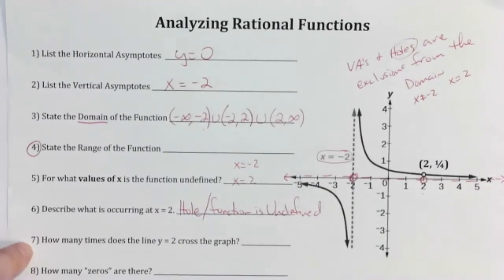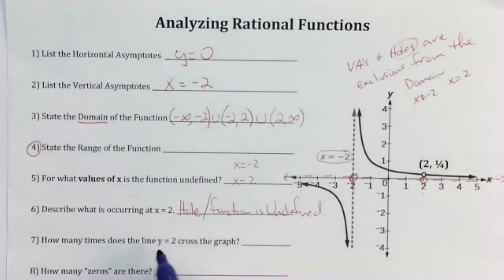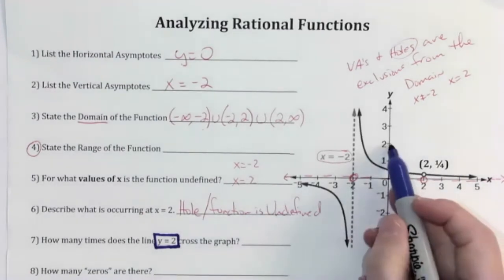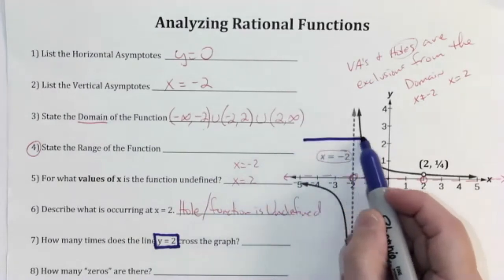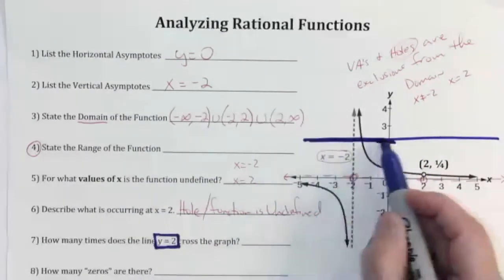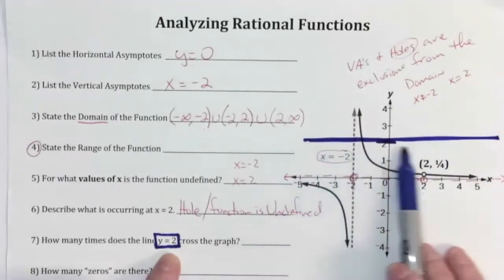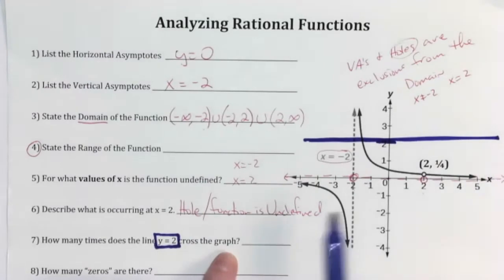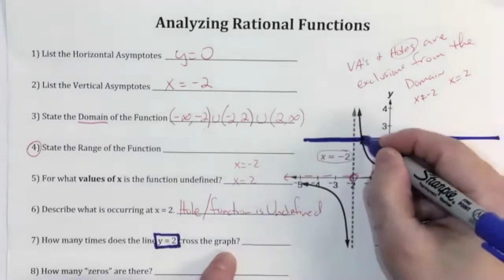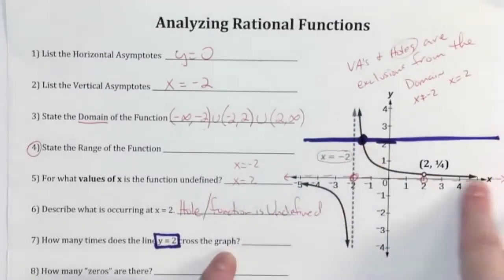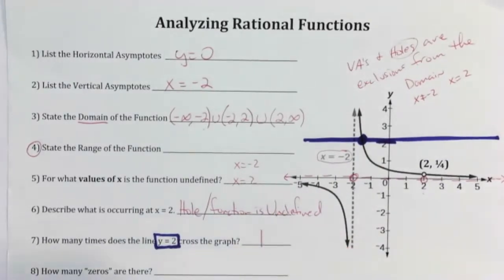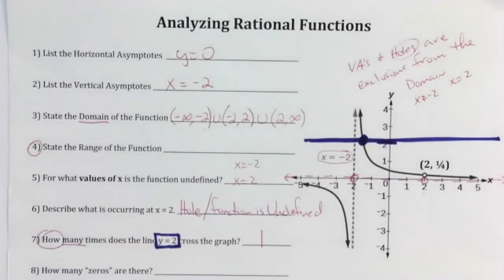Question seven asks: how many times does the line y equals two cross the graph? The equation y equals two is a horizontal line going through two on the y-axis. Drawing that imaginary horizontal line, it clearly doesn't cross anywhere in the lower part of the graph. It crosses just once in the upper portion, and the rest of the graph hugs below that line. So y equals two crosses the graph one time.